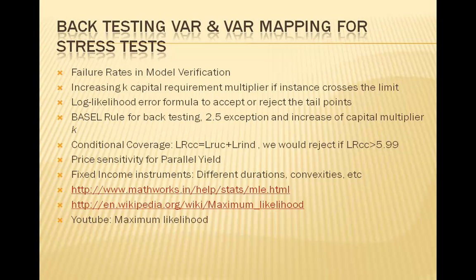The capital multiplier is normally 3 but can be increased to as much as 4 based on the accuracy of the bank's VaR model. There is a penalty zone chart: green zone is 0 to 4 exceptions with multiplier of 3; yellow zone is 5 to 9 exceptions with multiplier ranging from 3.4 to 3.85; red zone is 10 or more exceptions with multiplier of 4. K is the capital multiplier.